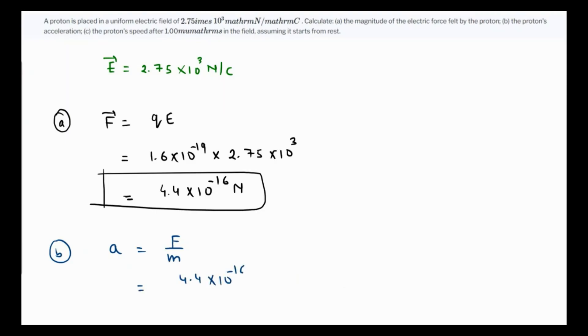This is the force and the mass of the proton is 1.67 times 10 raised to minus 27 kilograms. So the value of acceleration comes out as 4.4 over 1.67.